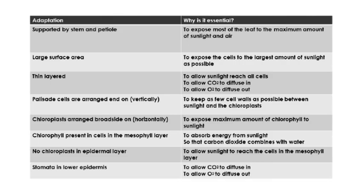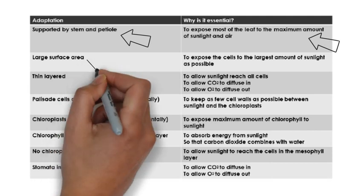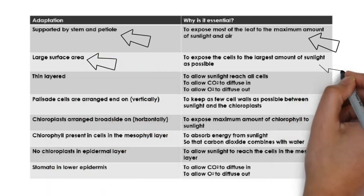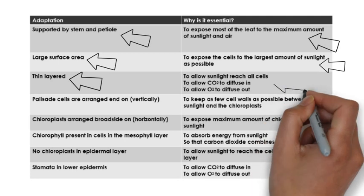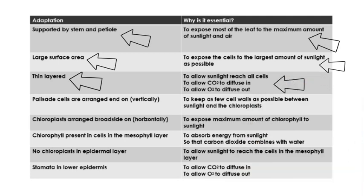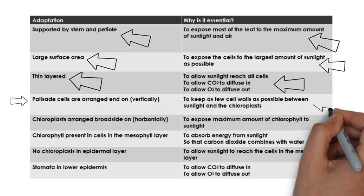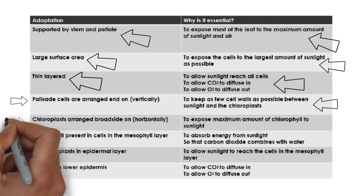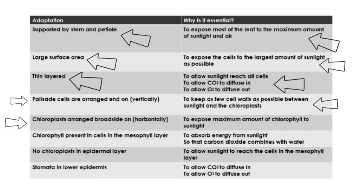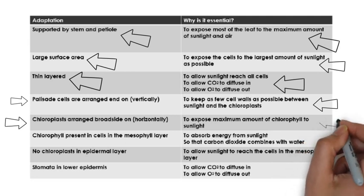Adaptations and why they are essential. The ability to be supported by stem and petiole exposes most of the leaf to the maximum amount of sunlight and air. A large surface area exposes the cells to the largest amount of sunlight as possible. Being thin-layered allows sunlight to reach all cells, CO2 to diffuse in and O2 to diffuse out. The palisade cells are arranged end on, or vertically, to keep as few cell walls as possible between sunlight and the chloroplasts. Chloroplasts are arranged broadside on, or horizontally, to expose the maximum amount of chlorophyll to sunlight.